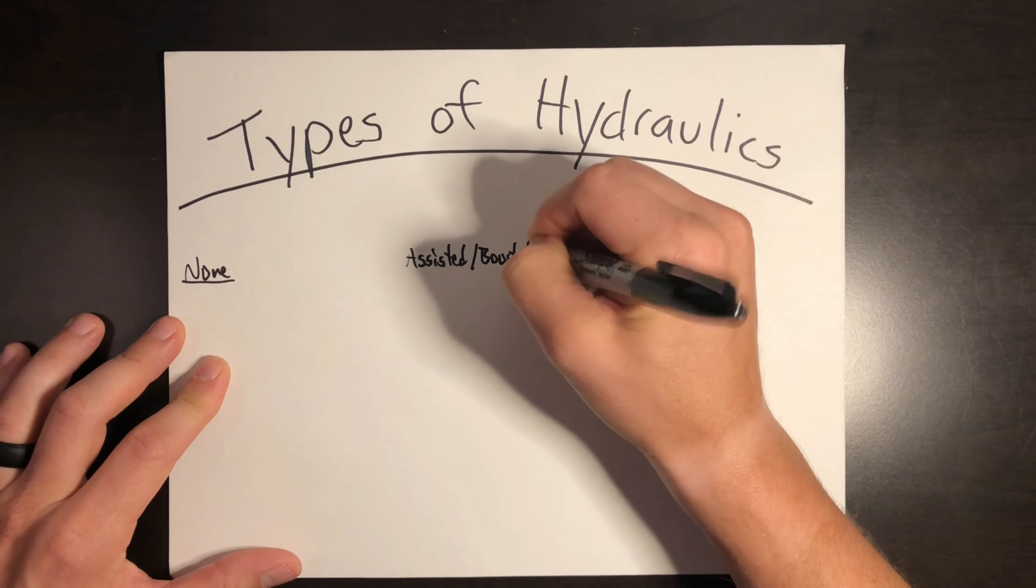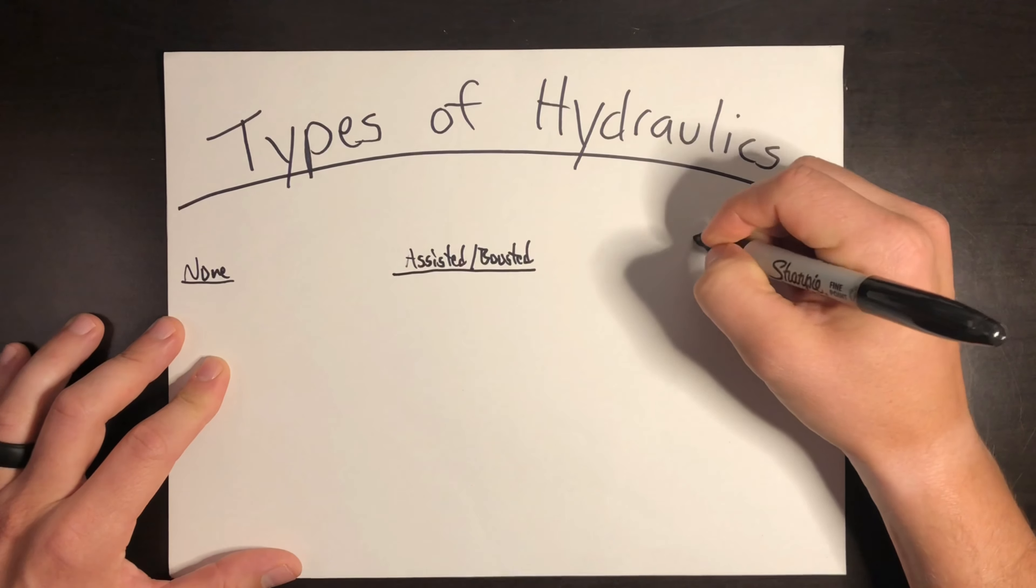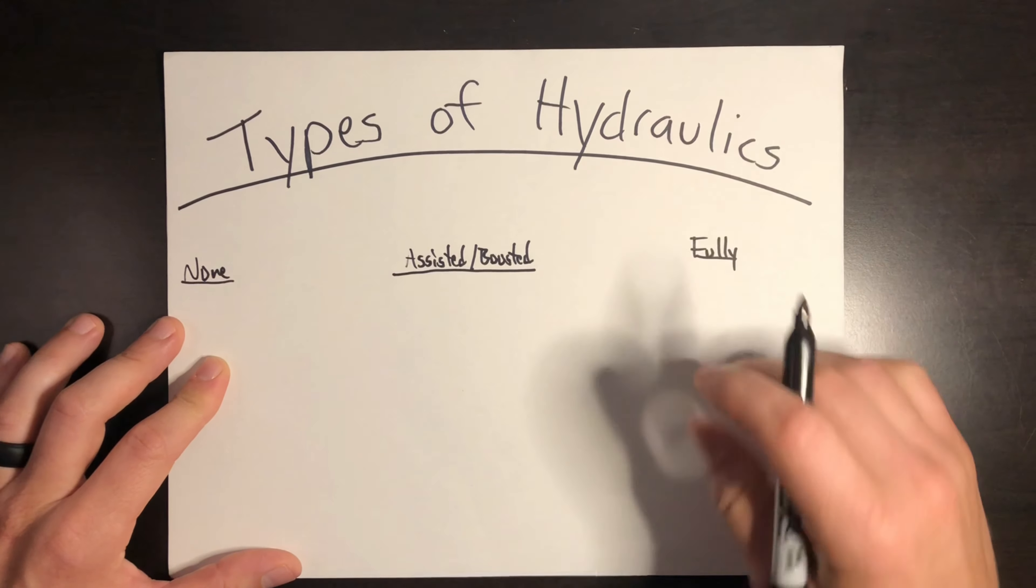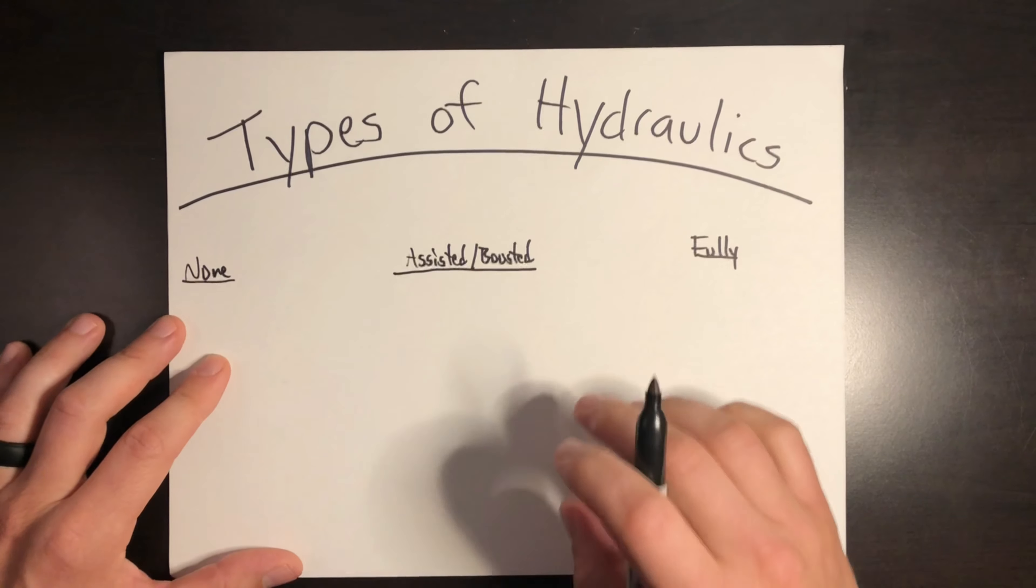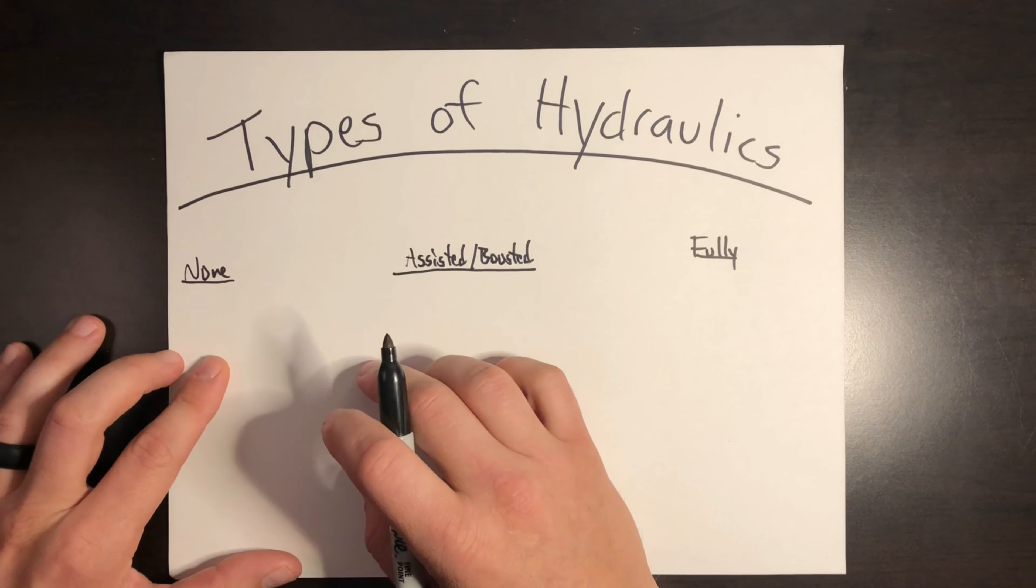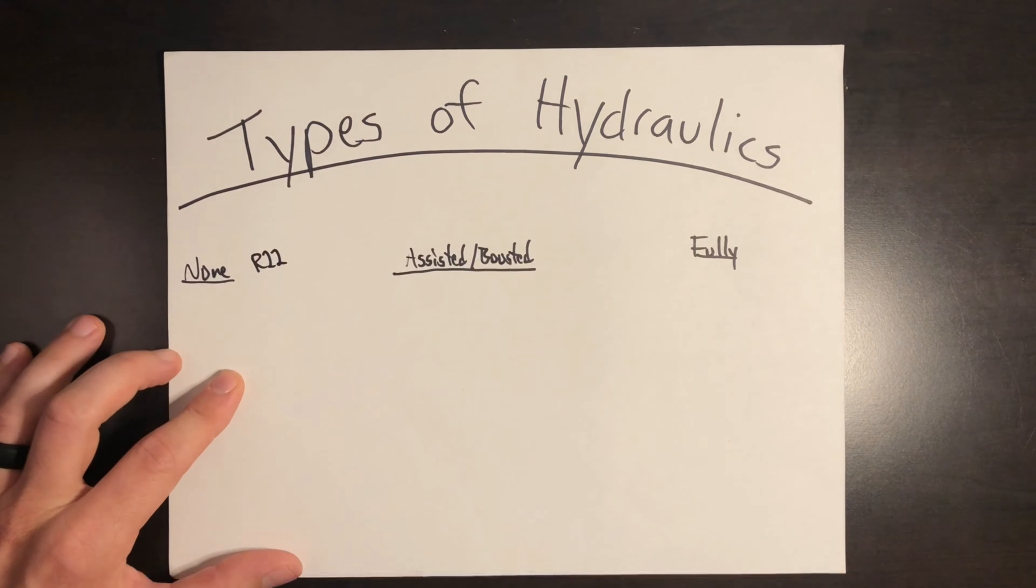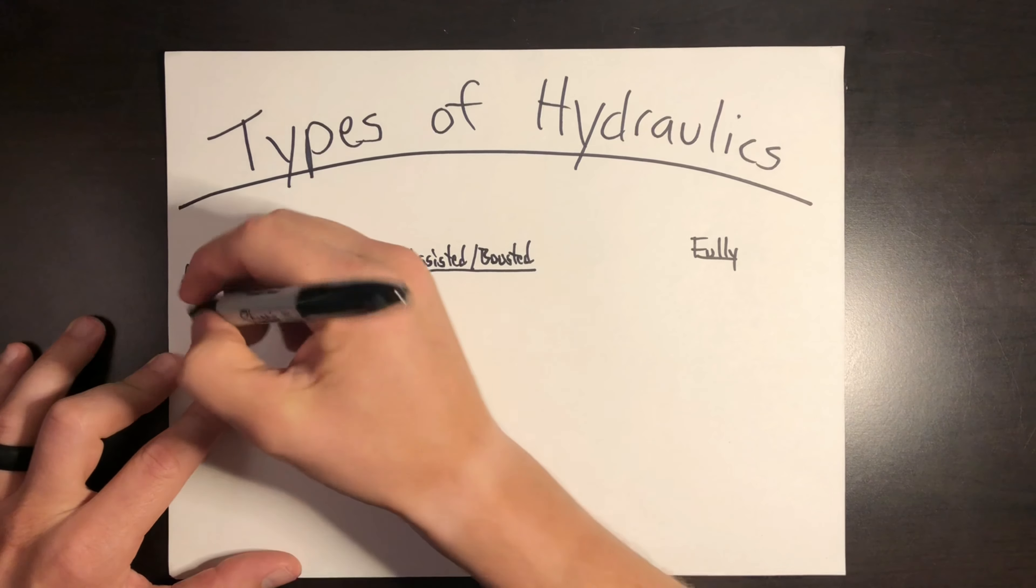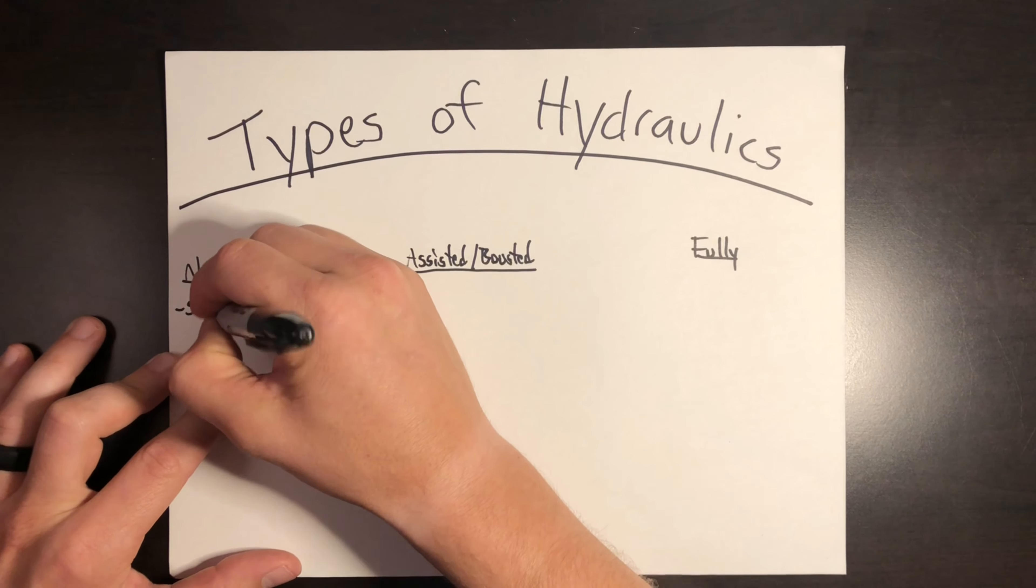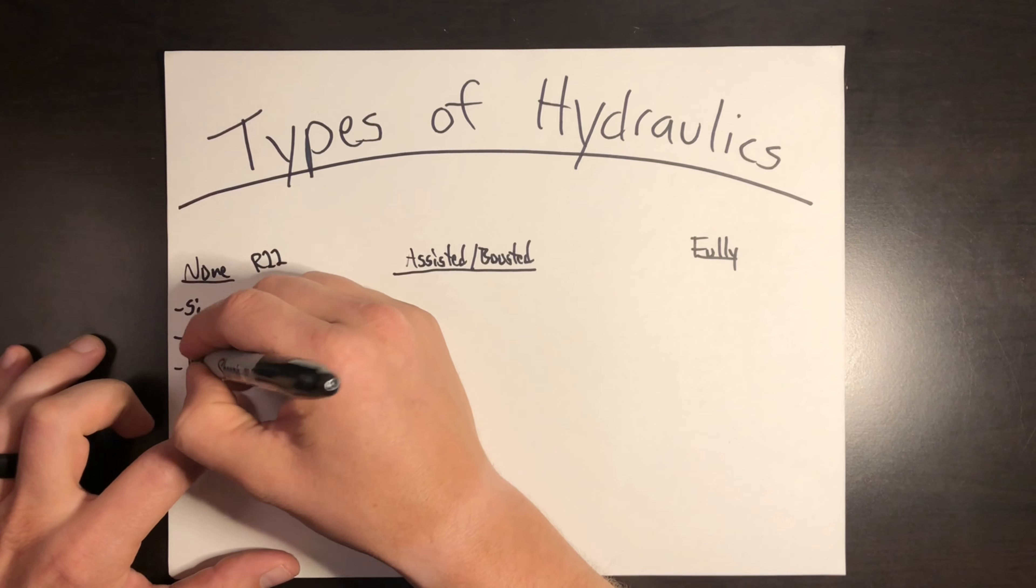In general, helicopters can fall into one of three categories of flight controls in regards to hydraulics. They either have no hydraulic flight controls, just bare bones push-pull rods. They're going to have some sort of hydraulically assisted or boosted flight controls, or they're going to be fully hydraulic.